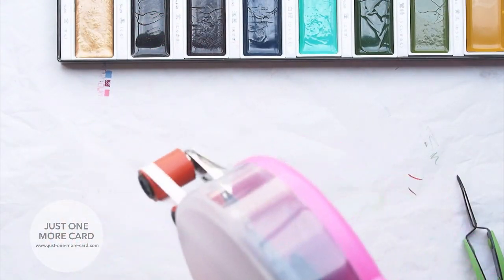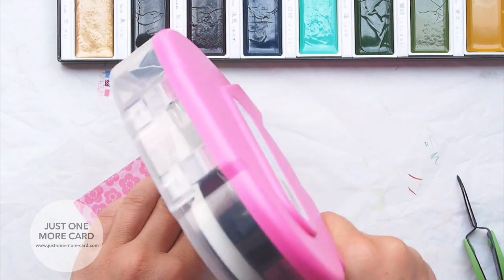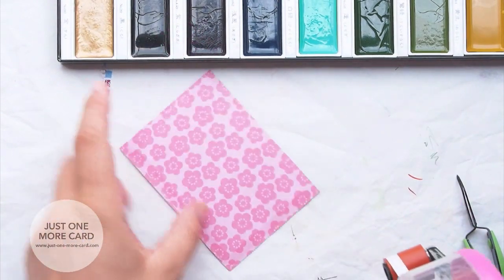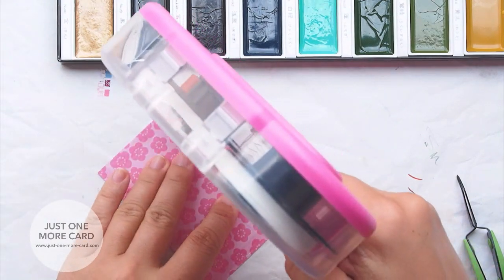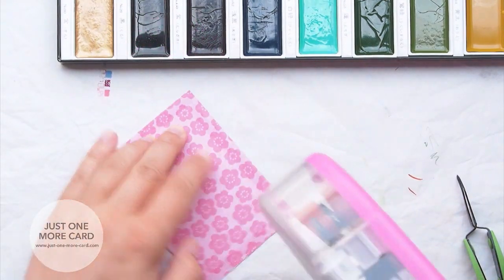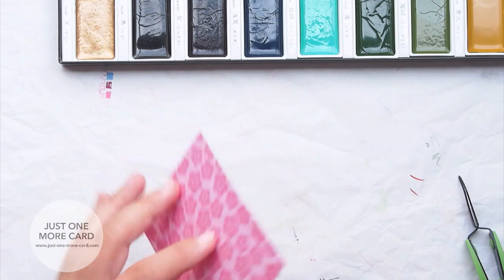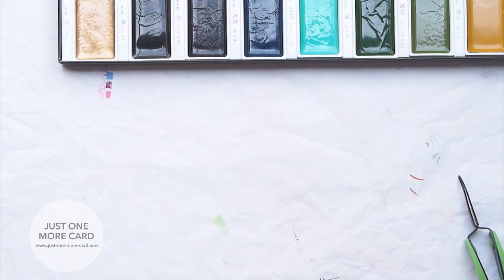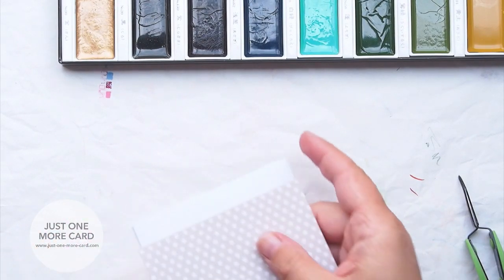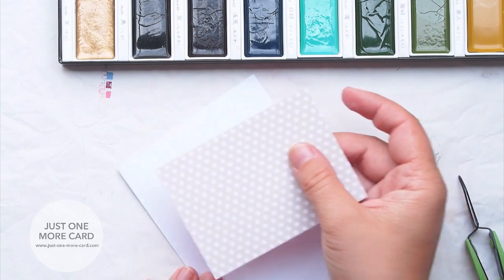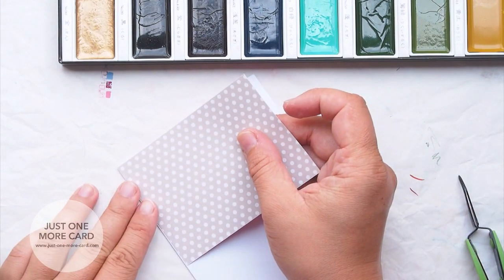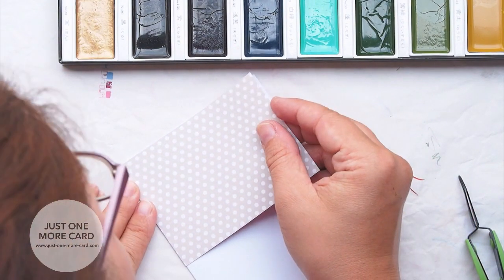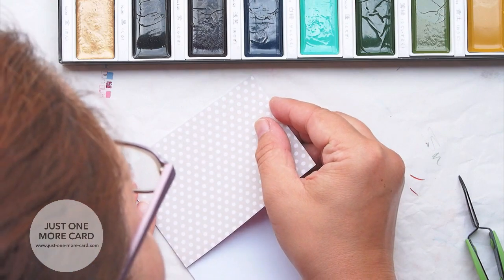I'm putting some adhesive on the back of my pattern paper because I'm going to adhere that to my card base. I'm just doing this now so the paintbrushes have some time to dry because I will need them in a moment. I'm being very generous with my adhesive just to be sure that it won't come up. I hate when the pattern paper just peels up on the edge, just looks careless. So that's why I overuse the glue all the time.